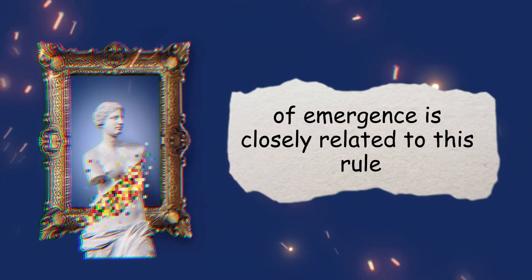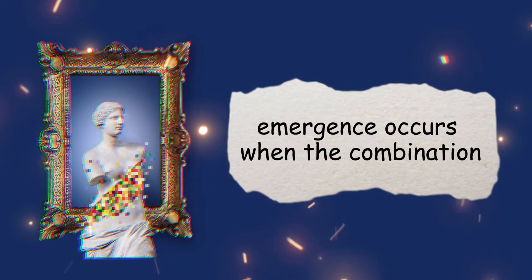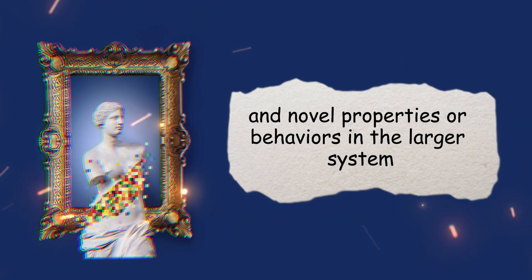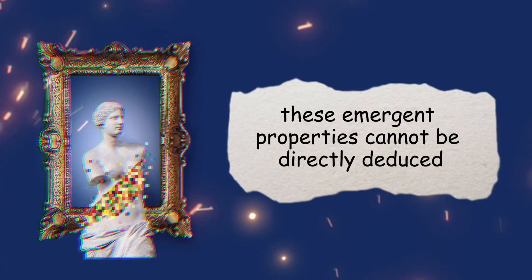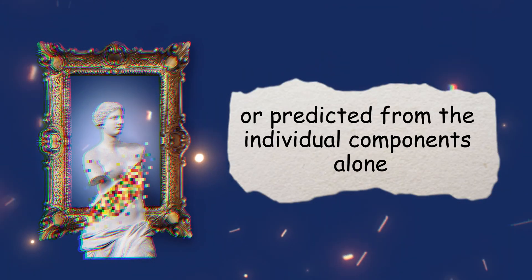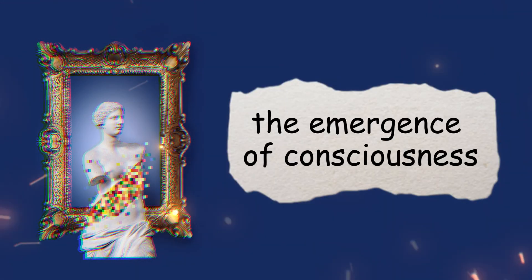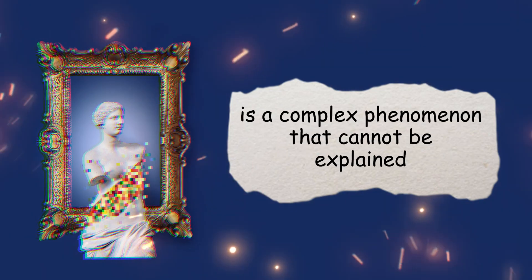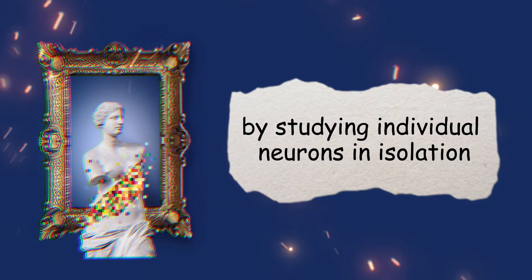Emergence. The idea of emergence is closely related to this rule. Emergence occurs when the combination or interaction of simple elements gives rise to complex and novel properties or behaviors in the larger system. These emergent properties cannot be directly deduced or predicted from the individual components alone. For example, the emergence of consciousness from the interactions of neurons in the brain is a complex phenomenon that cannot be explained by studying individual neurons in isolation.